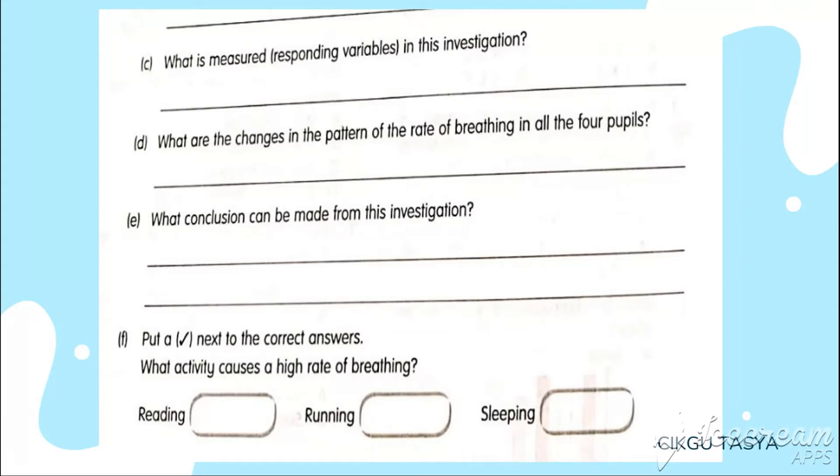Let's continue. What is being measured in this investigation? They're asking about responding variable. We already look what's responding variable, which is rate of breathing per minute. What is the changes pattern in the rate of breathing? They're asking for the changes in the graph. You can see it's increasing and then it's decreasing. So your answer will be increases and decreases.